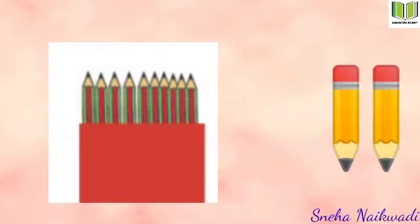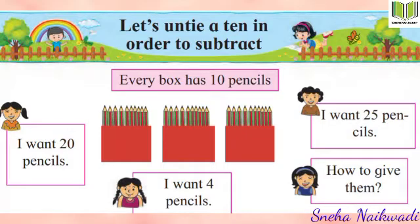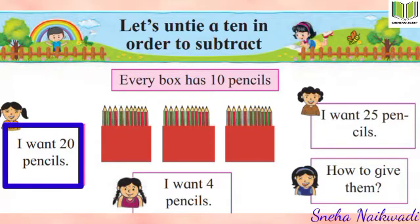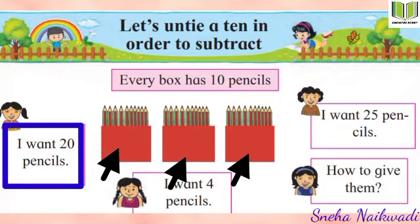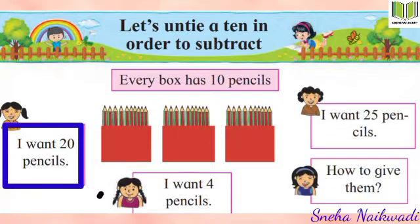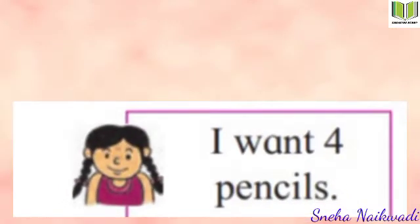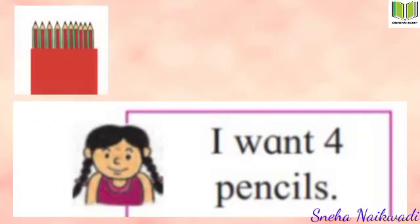Now let's look at this picture. You can see there are three bundles of 10 pencils each. The girl is saying she wants 20 pencils. So from this bundle of 10, this bundle of 10, and this bundle of 10 — there are 30 pencils total. She can easily take two bundles to get her 20 pencils.